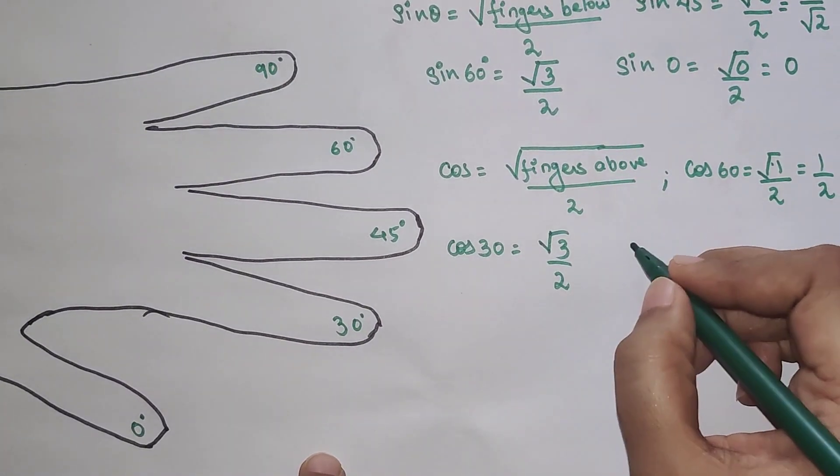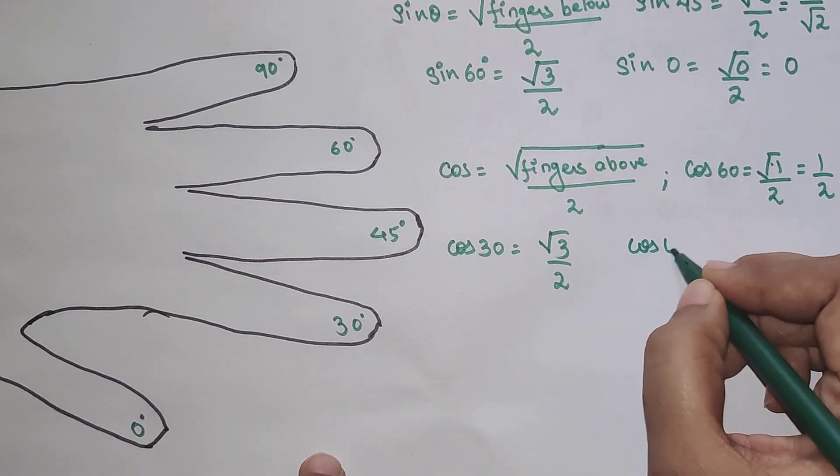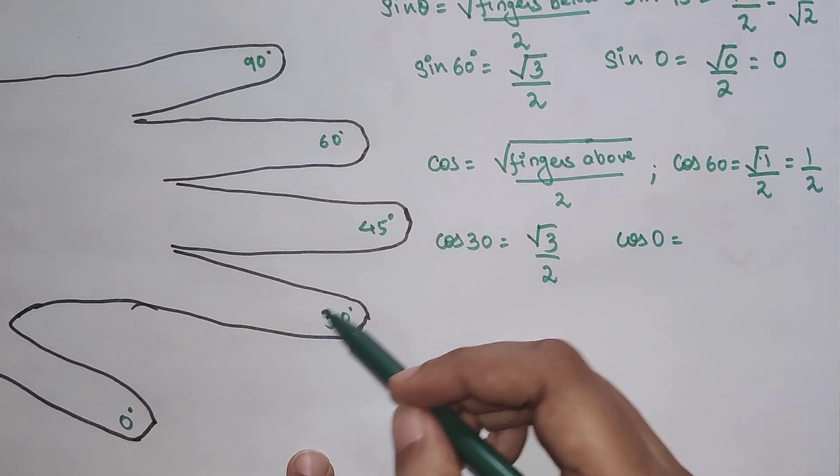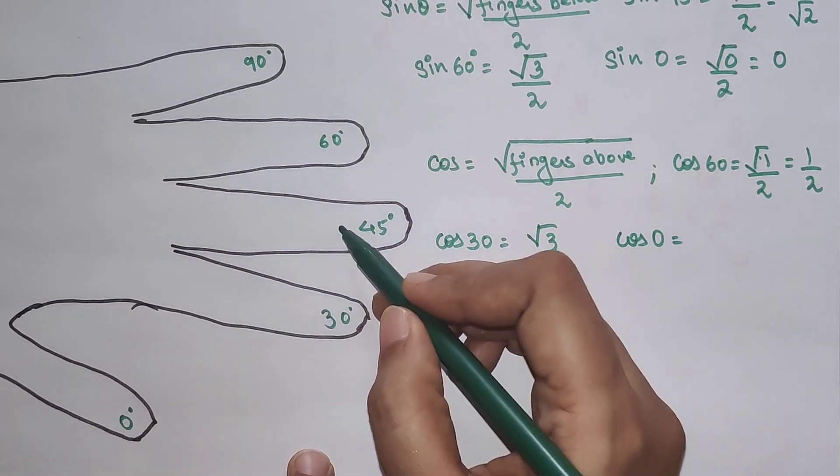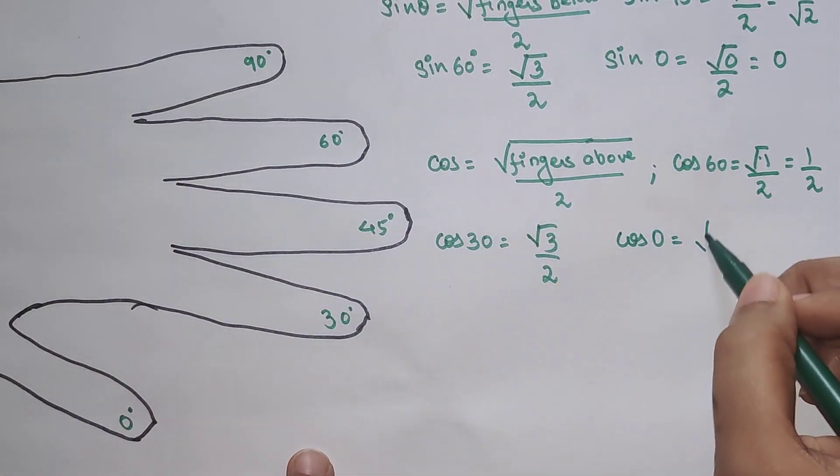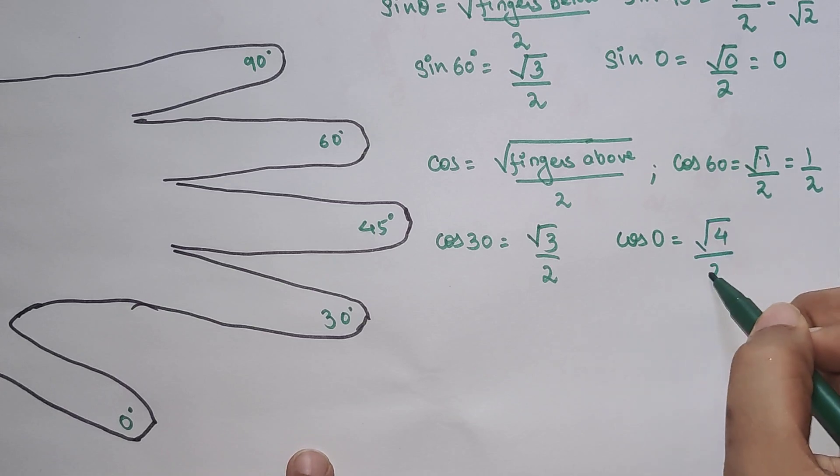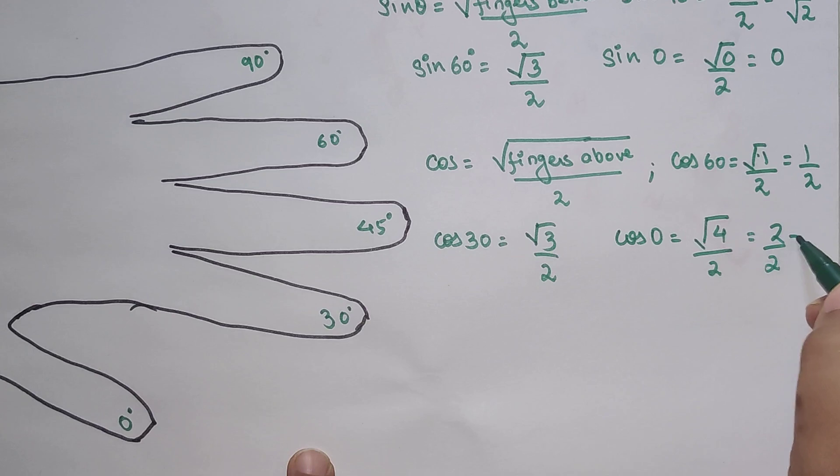Now let's try for cos 0. So cos 0 has how many fingers above it? 1, 2, 3 and 4. So we have root of 4 upon 2. And that's going to be root of 4 is 2. 2 upon 2 gets you 1.